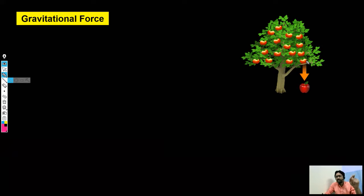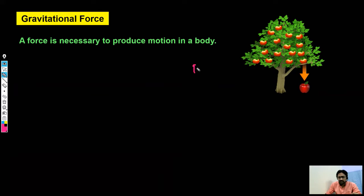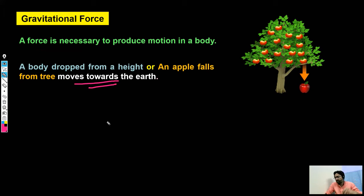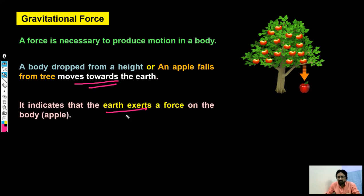Any fruit falling from a tree always moves towards the surface of the earth — more precisely, towards the center of the earth. If any object is initially at rest and then becomes in motion, there must be a force acting on it. So we can say that a force is necessary to produce motion in a body. Why does it only move towards the earth and not in any other direction? It indicates that the earth is exerting a force on the object, and that's why it always moves towards the surface or center of the earth.